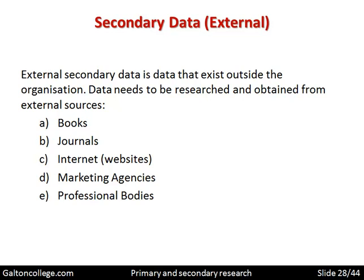Professional bodies collect information as well — accountancy bodies and marketing bodies like the Chartered Institute of Marketing. Different professional bodies collect and publish information that some companies are able to access and use to make better decisions. Government statistics are an obvious one. The government collects all sorts of statistics about the economy, the social framework of the country, different aspects of expenditure and taxation, and these may be useful to the business. Again, secondary data.